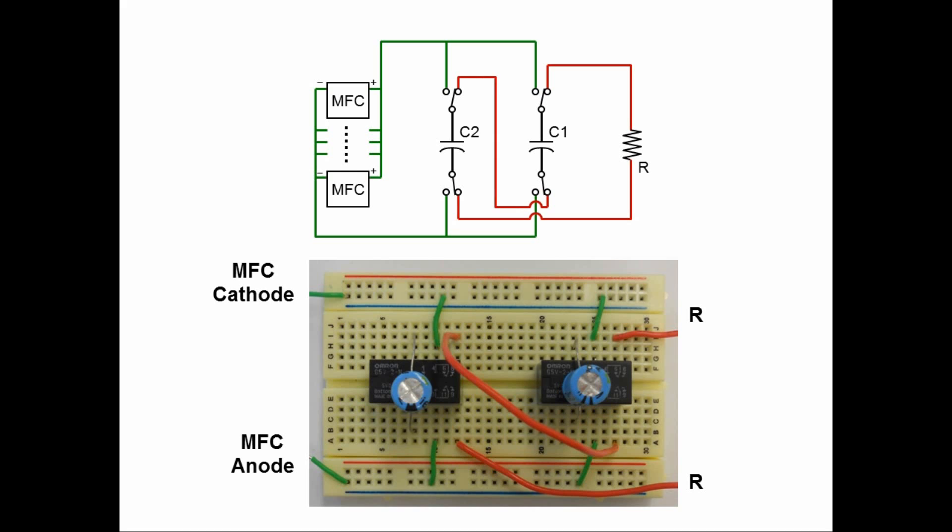Okay, when the charging is done, then the switches flip to the other end to connect the capacitors to the external resistance, making a disconnection with MFCs. So I'm going to do the same thing. I'm going to erase the disconnected green lines.